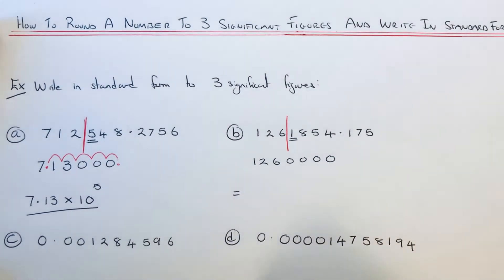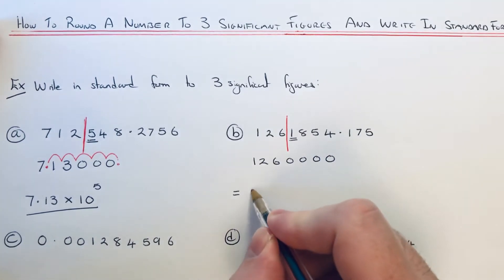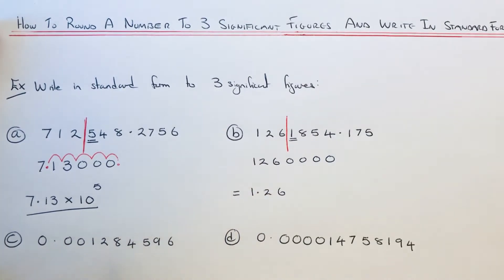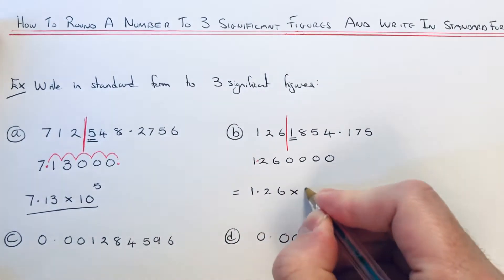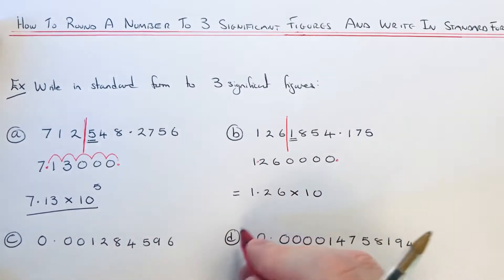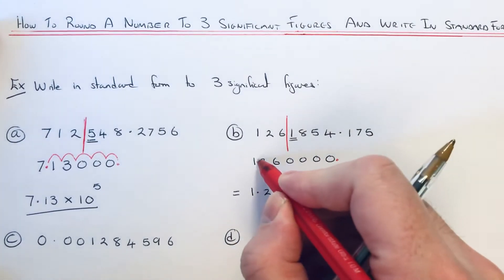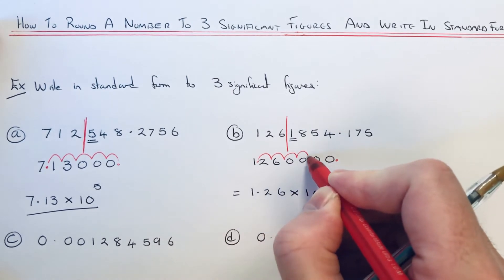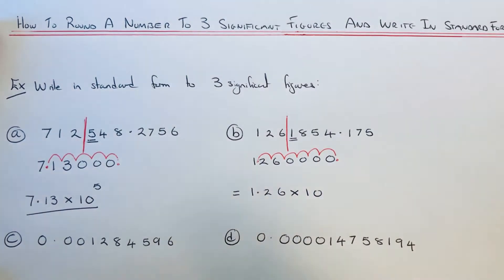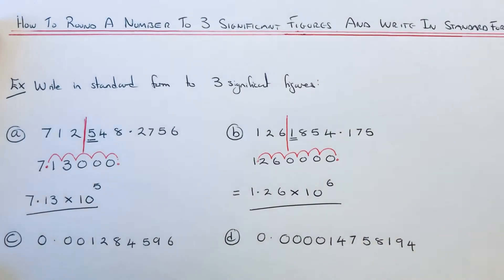We can now write this number in standard form. We make the first number between one and ten by putting the decimal point here — so it's 1.26. Count the number of jumps between the two decimals: one, two, three, four, five, six. So the answer is 1.26 × 10^6.